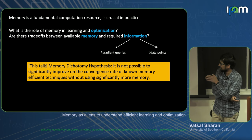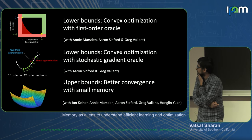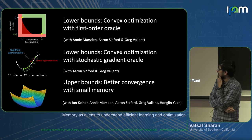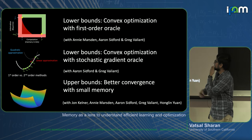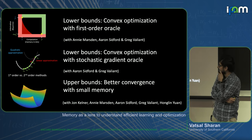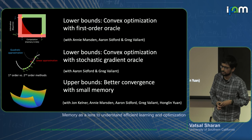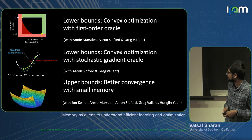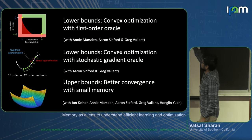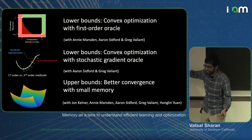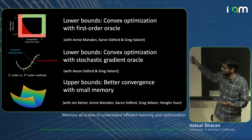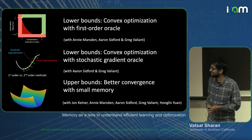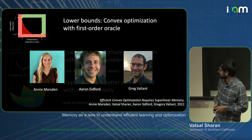I'll talk about roughly three things. The first setting will be convex optimization with first-order oracles — gradient oracles — and showing lower bounds for that setting. Second will be lower bounds on optimization with a stochastic gradient oracle. Finally, I'll talk about trying to use some of these ideas to get algorithms which have better convergence using small memory. I spend most of my time on the first one, less on the second, even less on the third.